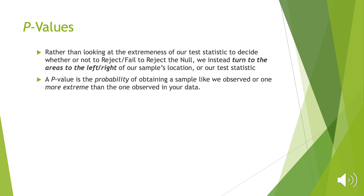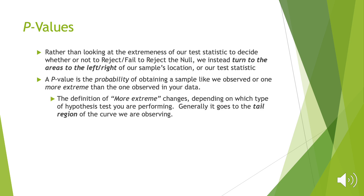A p-value is a probability — the 'p' stands for probability, not for proportions. It's the probability that we would randomly select a sample producing what we're seeing, or a sample more extreme than what we're seeing in our data. The definition of 'more extreme' changes depending on the type of hypothesis test: for a left-tail test, the extreme area is on the left-hand side; for a right-tail test, it goes to the right.